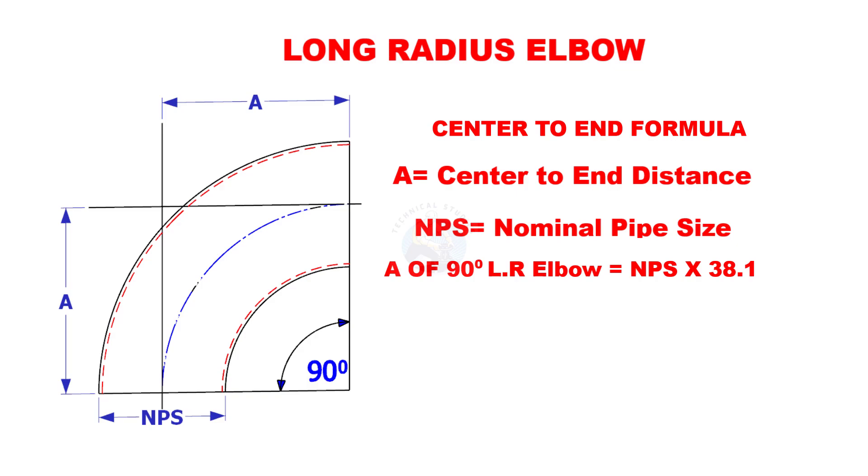A of a 90 degree long radius elbow is nominal pipe size multiplied by 38.1. Here 38.1 is a constant.